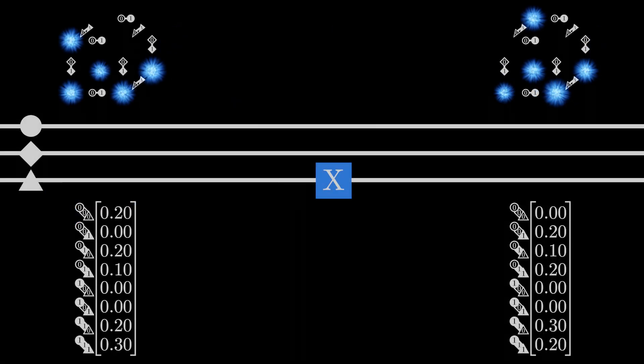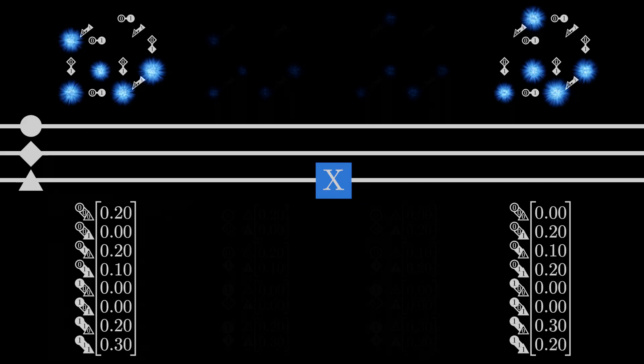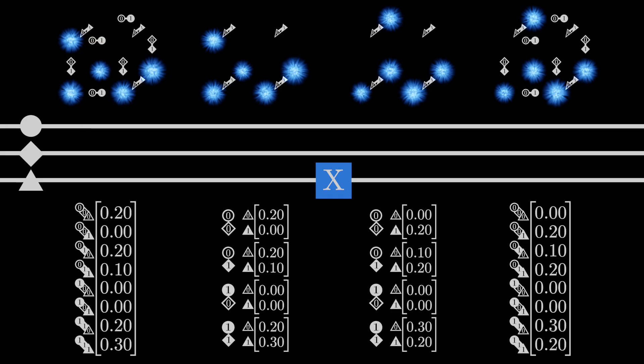This could be more easily appreciated in a larger system, so let's add a third qubit. Notice now that there are eight possible results from measuring the system. That means we need eight probabilities to account for entanglement. When we pass one of the qubits through a not gate, that acts to flip all pairs of probabilities associated with that qubit.